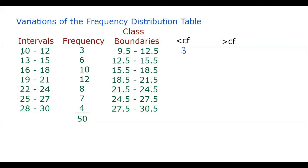Since there are 3 observations from 10 to 12, for the next class interval there are 6 more observations. So the number of observations less than the upper class boundary 15.5 is just 3 plus 6, since there are 3 observations in 10–12 and 6 observations in 13–15. So we have 9. It's called cumulative because we just add the frequencies. The number of observations less than 18.5 is 3 + 6 + 10, which is 19. Then we add 12, giving 31. Then plus 8, this becomes 39.